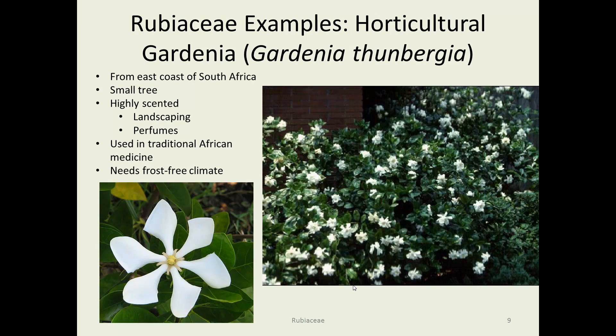Horticulturally, there are quite a few species of gardenia. The most commonly grown is Gardenia thunbergii, shown here, but there are several other types. It has been hybridized to produce double flowers that hardly look like a typical Rubiaceae flower anymore. They originate on the east coast of South Africa and are generally small trees or shrubs. The scent is just heavenly, so they're used in both perfumes and landscaping, and — consistent with this family — they're used in African medicines.